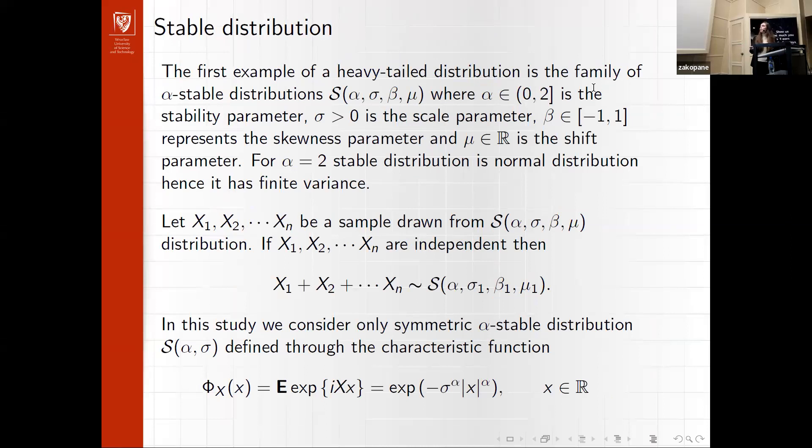Right now I'm going to present the results of those statistics for two different distributions. The first distribution is stable distribution, that can be parametrized by four parameters. The first is alpha, the stability parameter, responsible for the heavy-tailed behaviour.